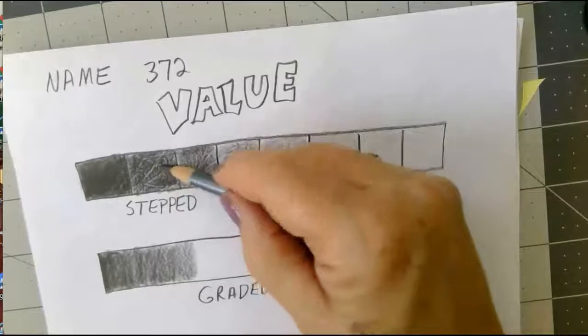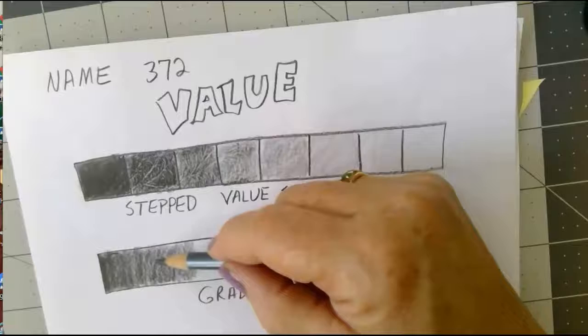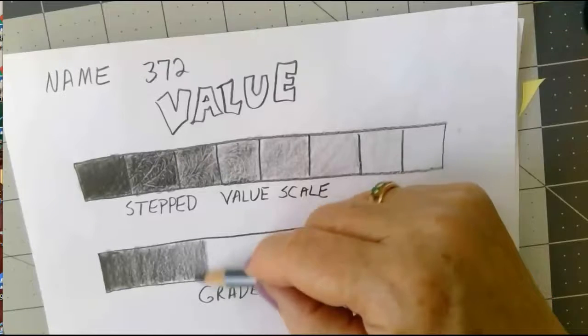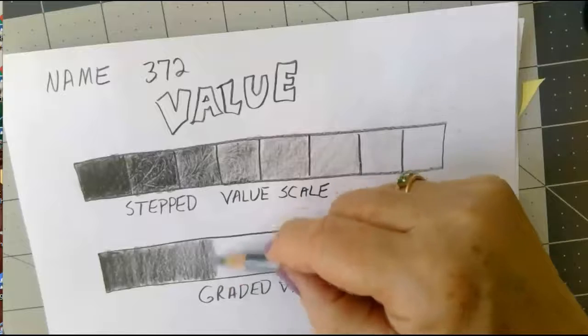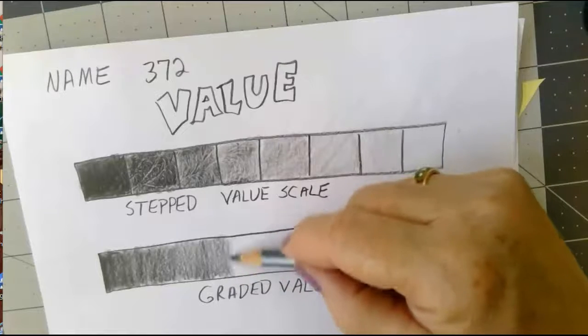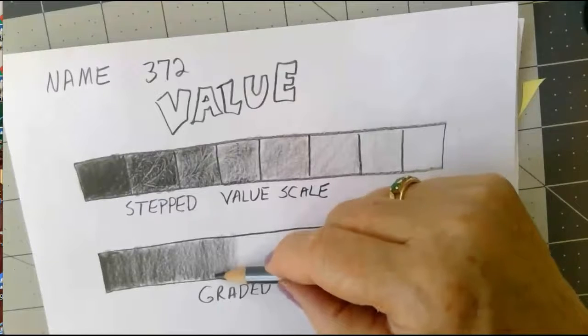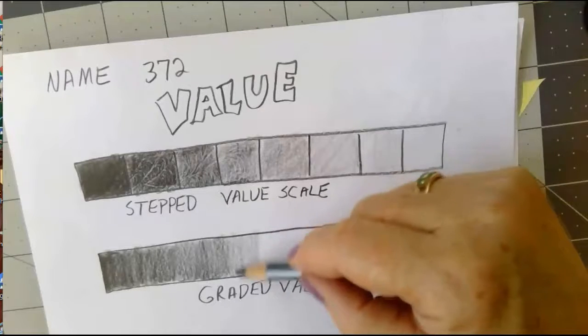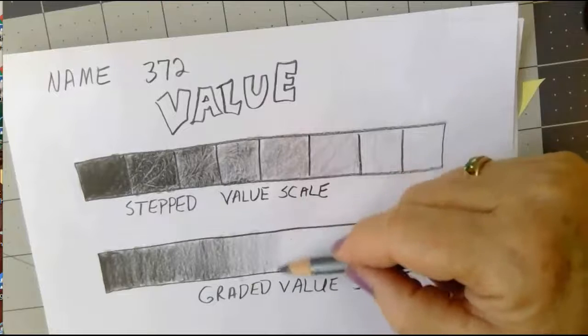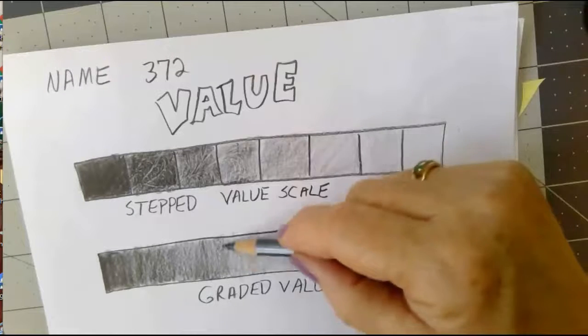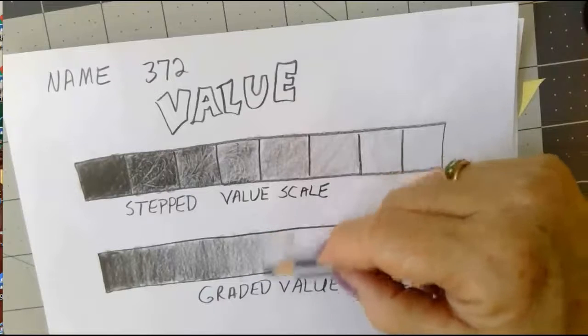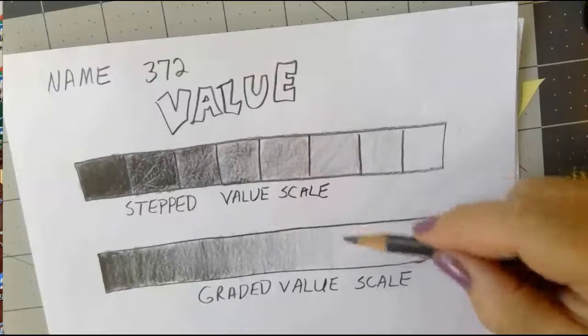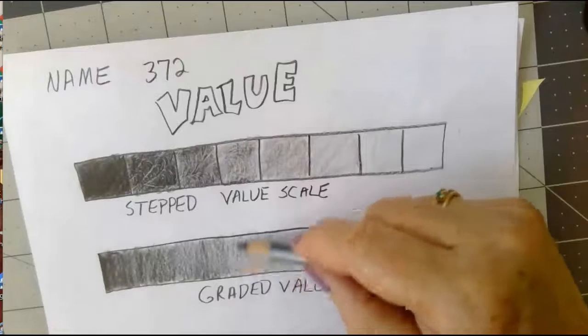As I work I'm looking at the one above to give me an idea about how dark I should be at this point in my graded value scale. I don't want to see a line between one value and the next. I want each value to blend neatly into the next.